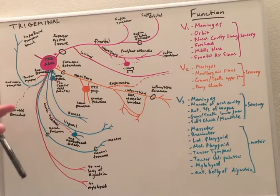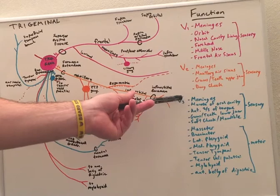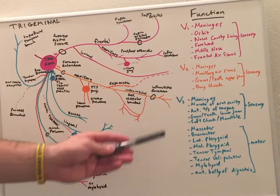Now continuing on to our third and most complex branch, the mandibular or V3 branch. Now this one provides sensory input to the meninges, mucosa of the oral cavity, anterior two-thirds of the tongue just general sensation, and gums and teeth of the lower jaw and soft cheek and mandible.